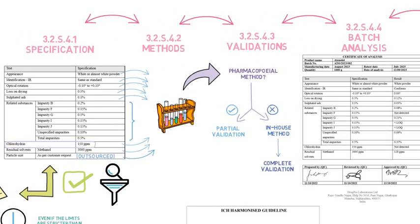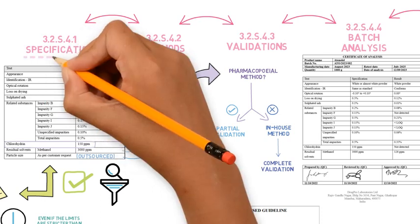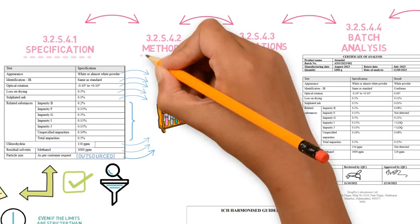After the validations, batch analysis results are presented for the three batches that were used for the process validation, which were tested using this specification and these methods that were described.